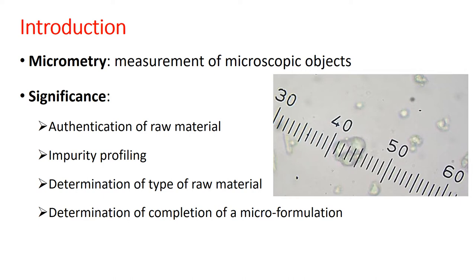If you ordered rice starch but the supplier provided potato starch, under the microscope with the help of micrometry you will be able to distinguish between them. Remember, in this case you cannot use the iodine test because both starches will test positive for iodine — micrometry is the only method to distinguish between different types of starches.